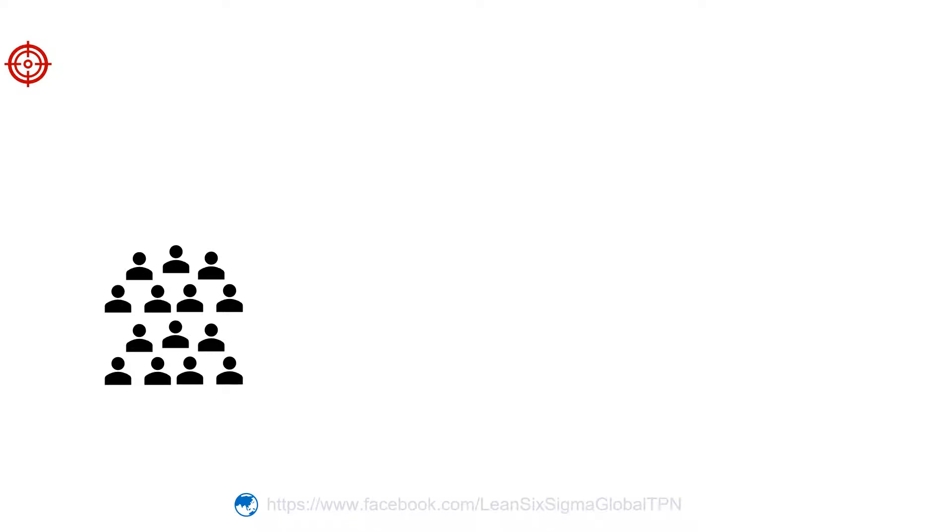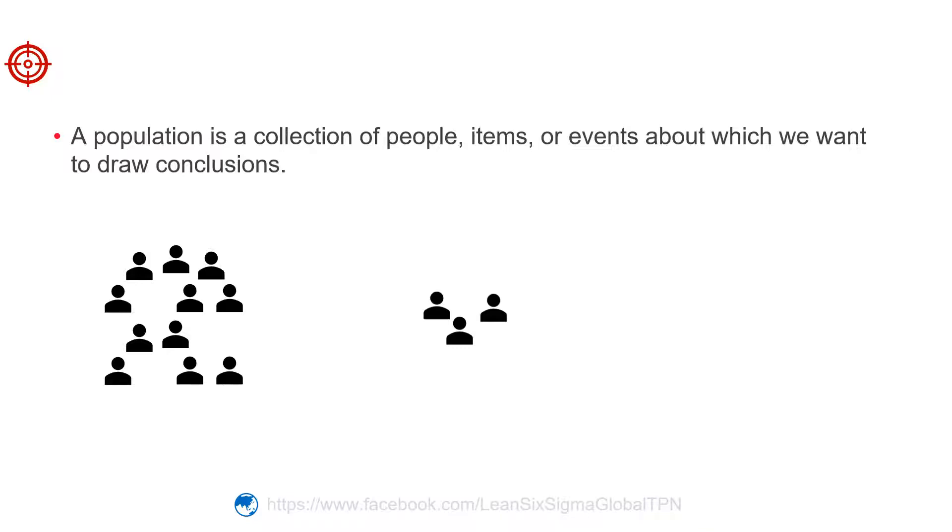So what is a population? A population is a collection of people, items, or events about which we want to draw conclusions. A sample is a subset of the population.